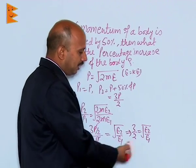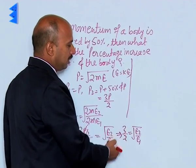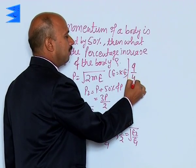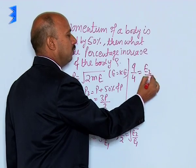Now, we can write this thing. Squaring to remove the square root from this side, you will be getting 9 by 4 is equal to E2 by E1.